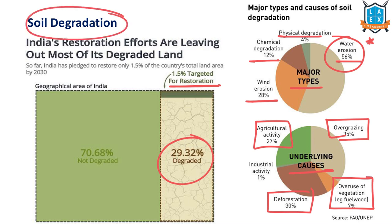Soil degradation is one of the biggest environmental threats because it limits food availability, leading to food insecurity. That's why FAO monitors the soil degradation status of countries. According to the UN, 12 million hectares of farmland is getting severely degraded. In India, approximately 29.32% of land is degraded, out of which 1.5% of land is targeted for restoration. India has pledged to restore this land by 2030.